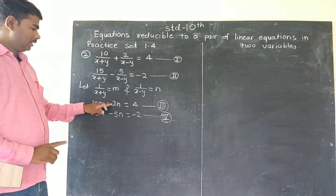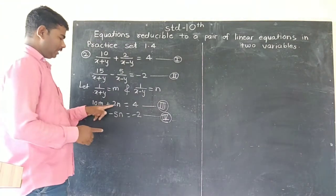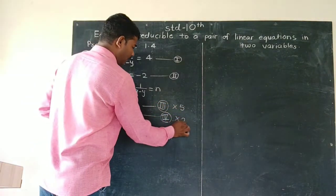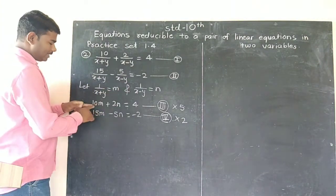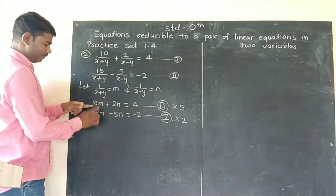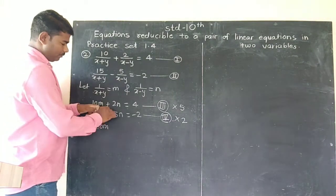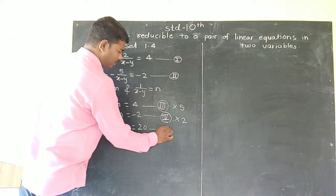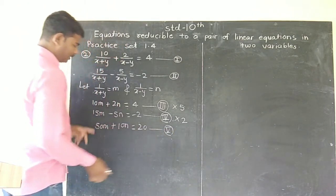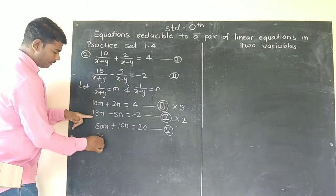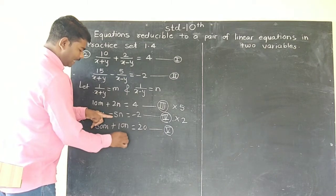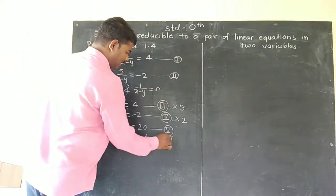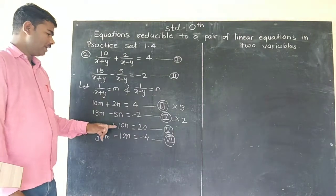We multiply the equations by coefficients to eliminate one variable. Multiplying equation one by 5 gives 50m plus 10n equal to 20 — this is equation 5. Multiplying equation two by 2 gives 30m minus 10n equal to minus 4 — this is equation 6.